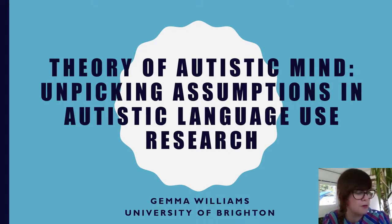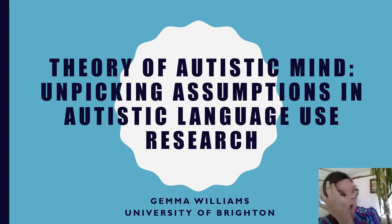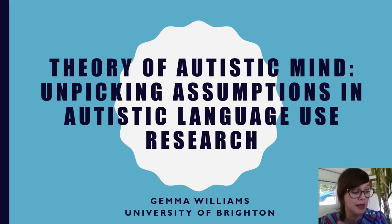So first of all I will explore the notion of theory of mind and try to tease out some of the assumptions that underpin it. I'll then outline some alternative theories addressing the pragmatic difficulties seen in autism and talk about how that relates to autistic language research. And finally, the part that I'm most interested in in the work that I'm doing, I'll explore whether mutual manifestness can be a useful framework for understanding these difficulties and differences.